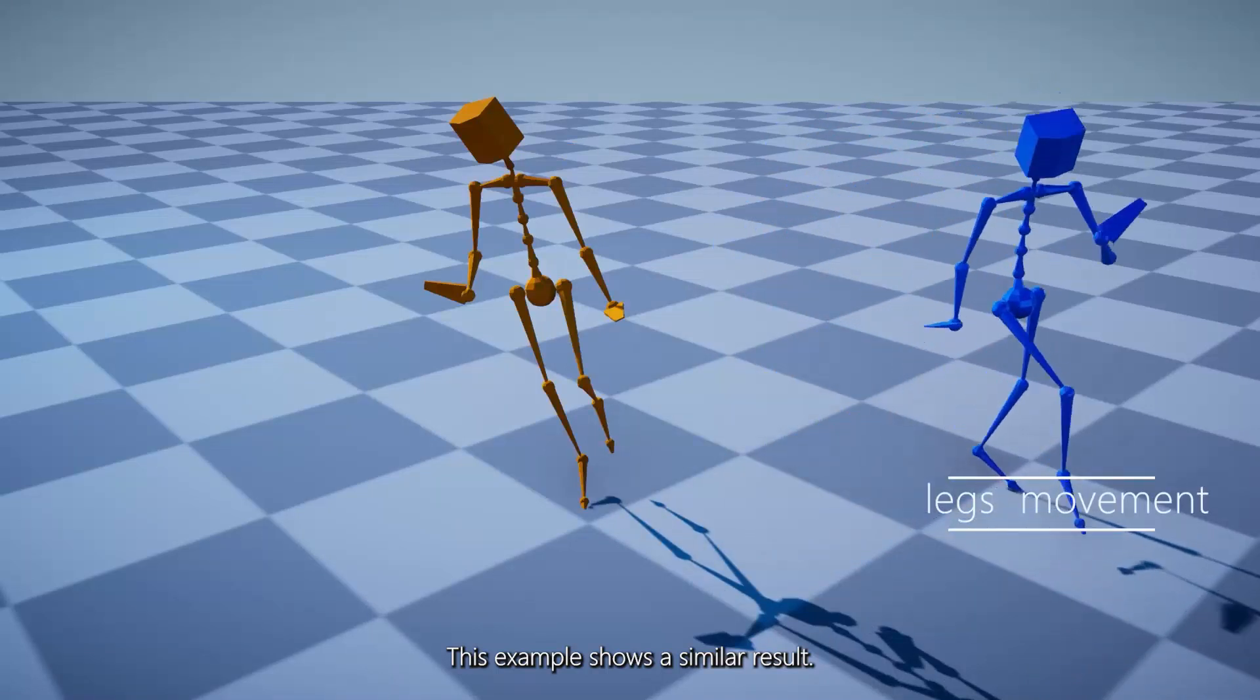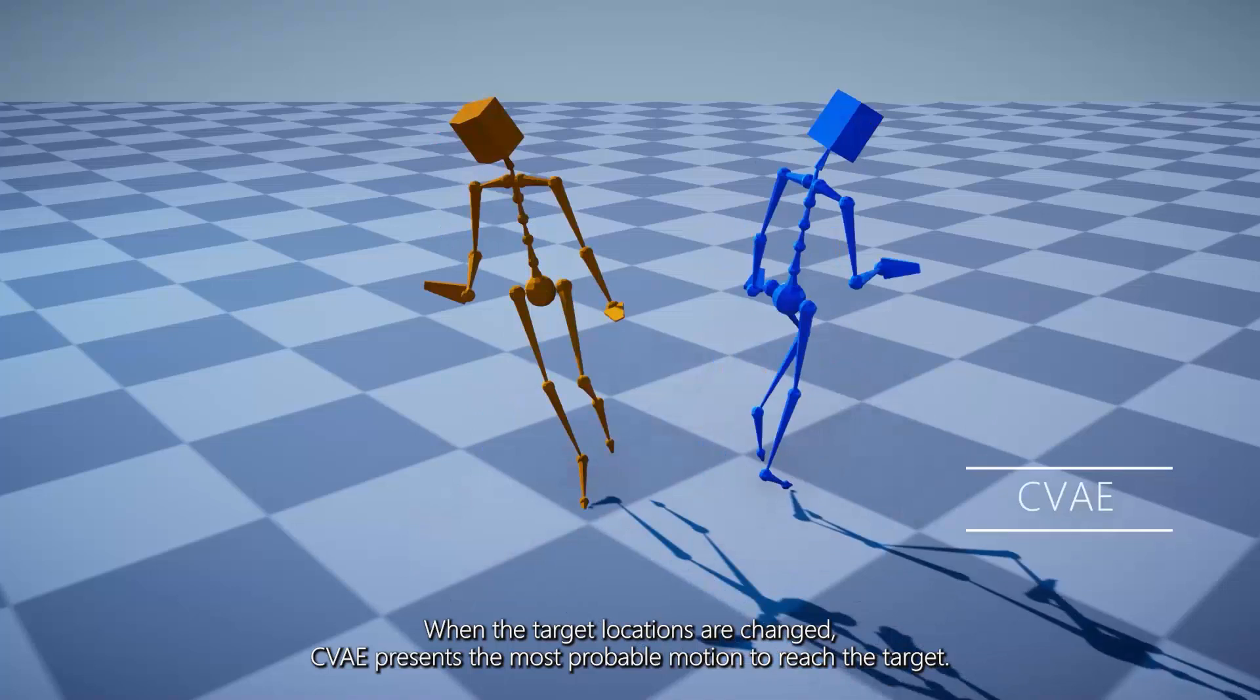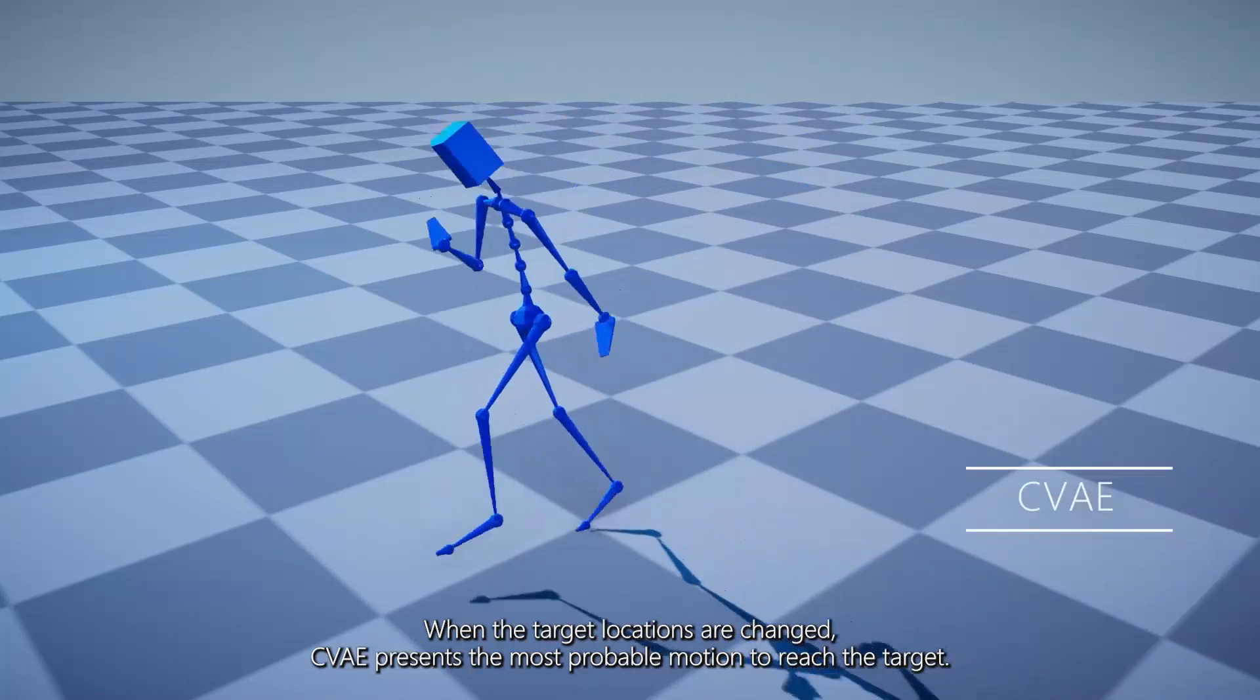This example shows a similar result. When the target locations are changed, CVAE presents the most probable motion to reach the target.